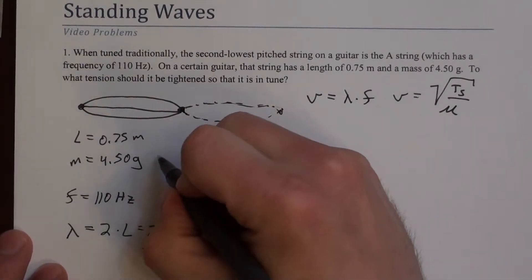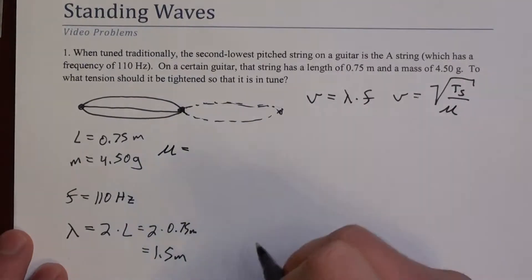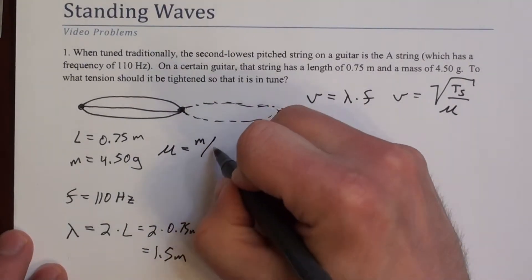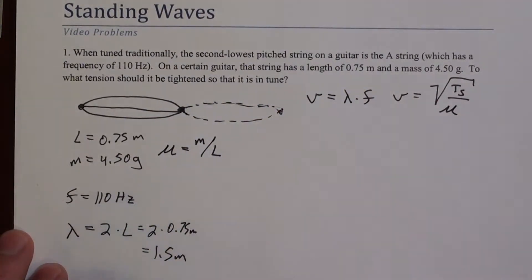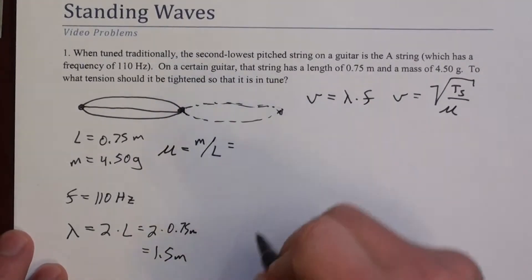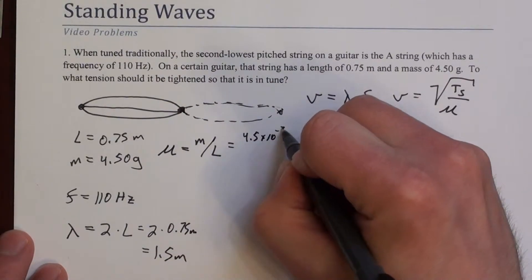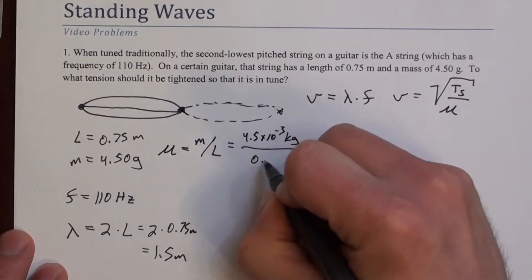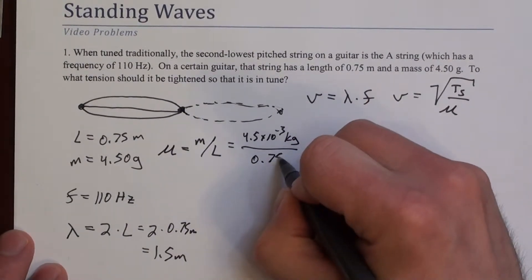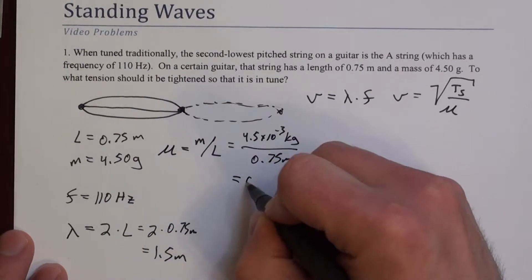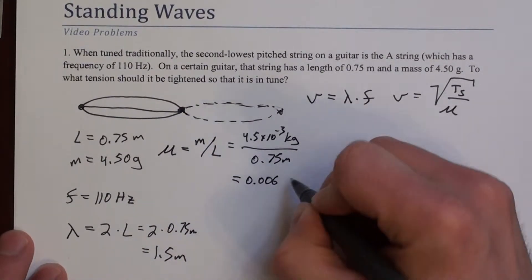Which I can actually calculate over here. μ is mass divided by length, total mass divided by total length. So mass is 4.5 times 10 to the minus 3 kilograms. The length is 0.75 meters. And what I get for μ is 0.006 kilograms per meter.